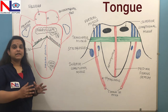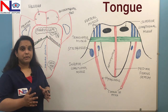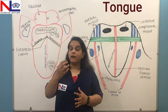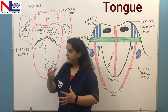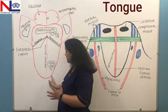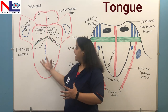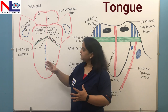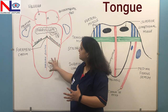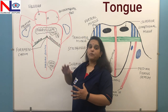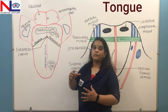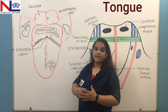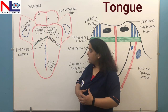The tongue is basically divided into three parts. The anterior part is the apex or the tip, which is free. The main middle portion is called the body. And the posterior part is called the root, from which it attaches to the back of our mouth.